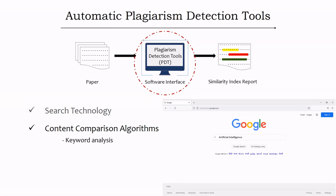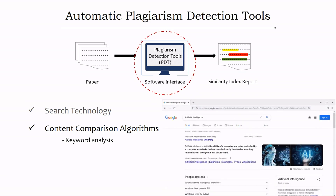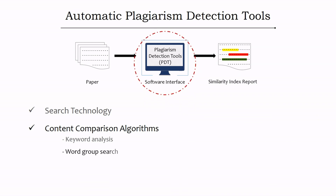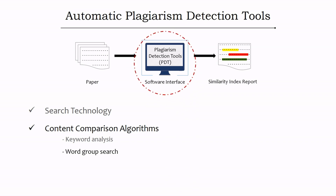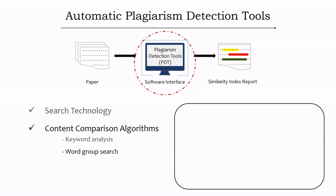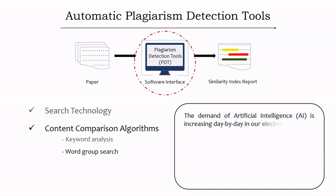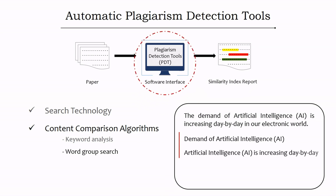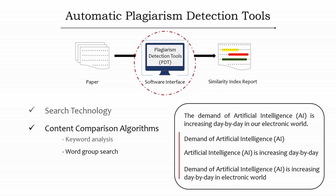The second aspect is word group search. Instead of searching individual words, the software looks for sequences of words or strings. For example, for the sentence 'The demand of artificial intelligence is increasing day by day in our electronic world,' the software may search strings like 'demand of artificial intelligence' or 'artificial intelligence is increasing day by day' — searching sentence fragments rather than the whole sentence.